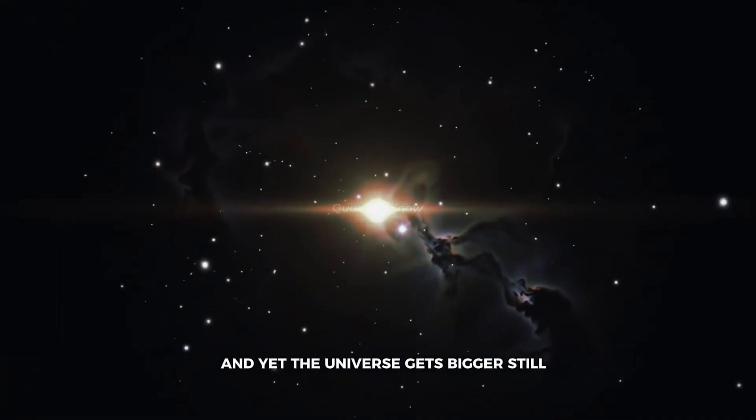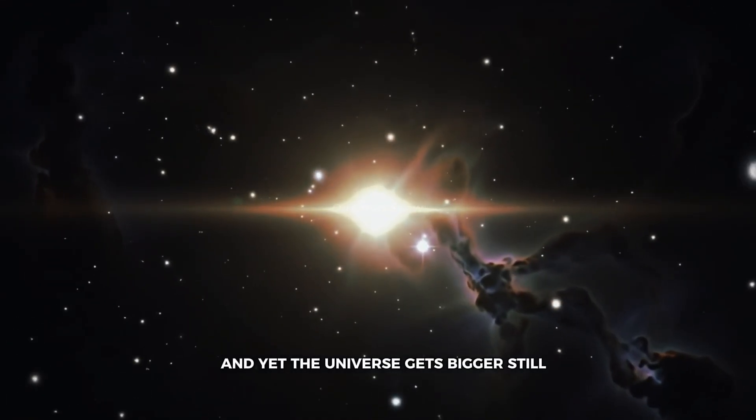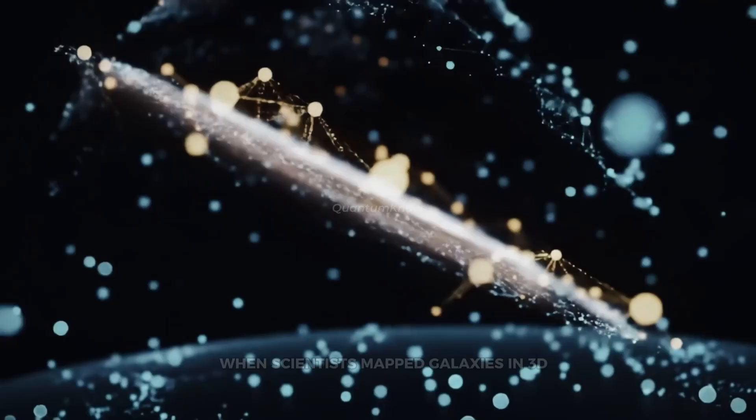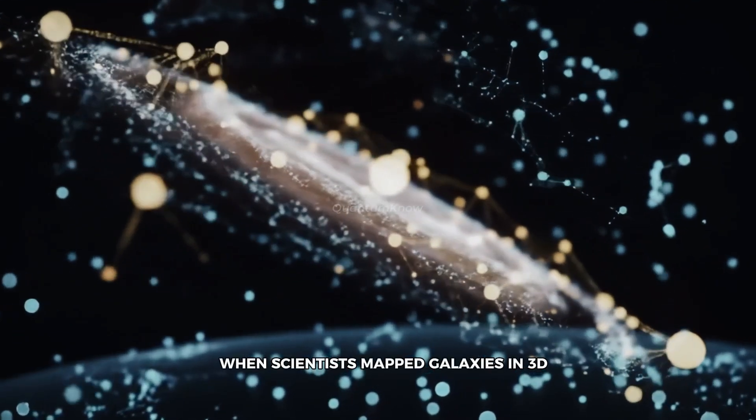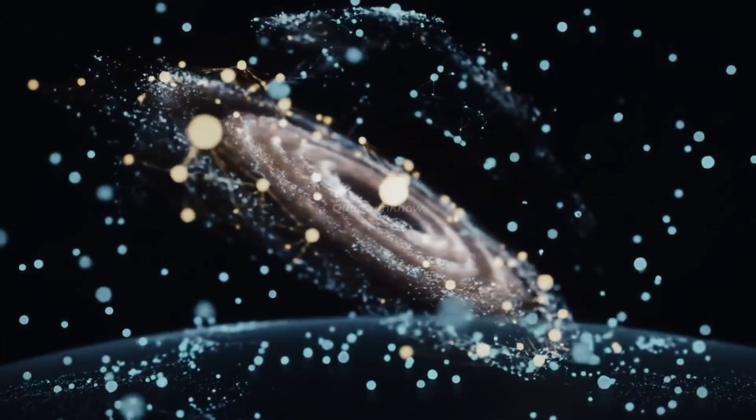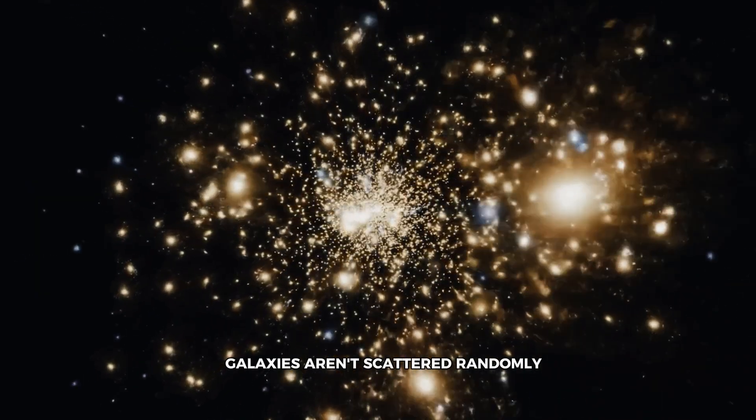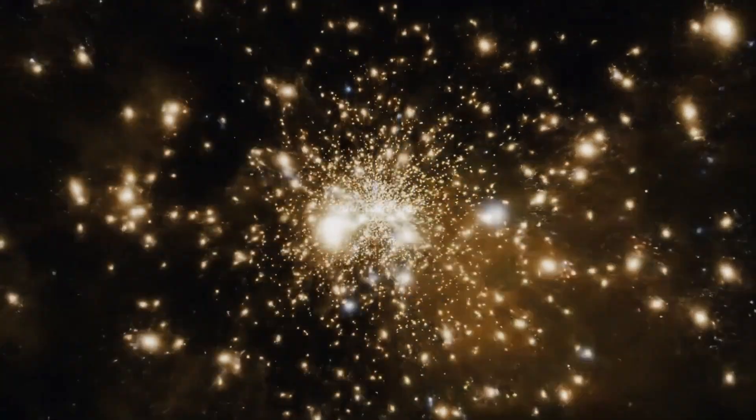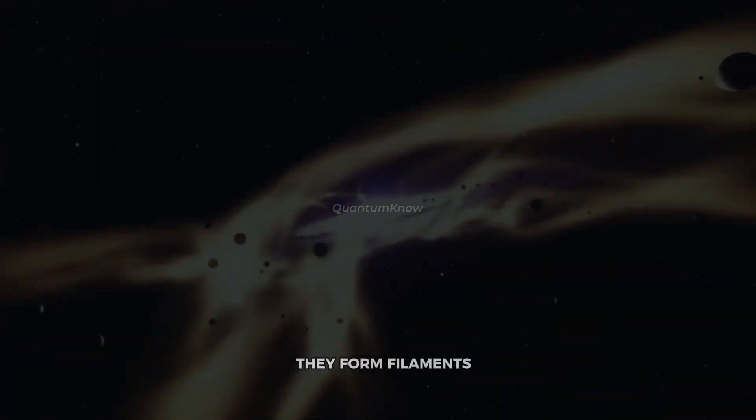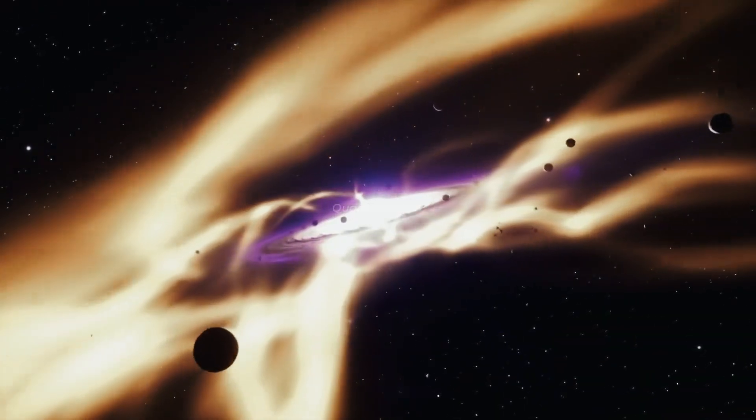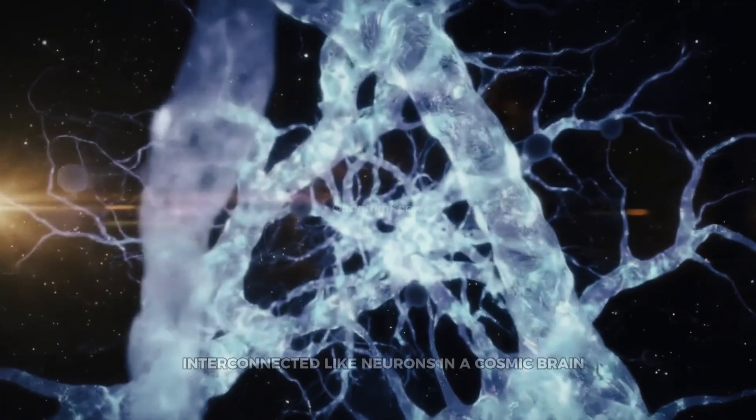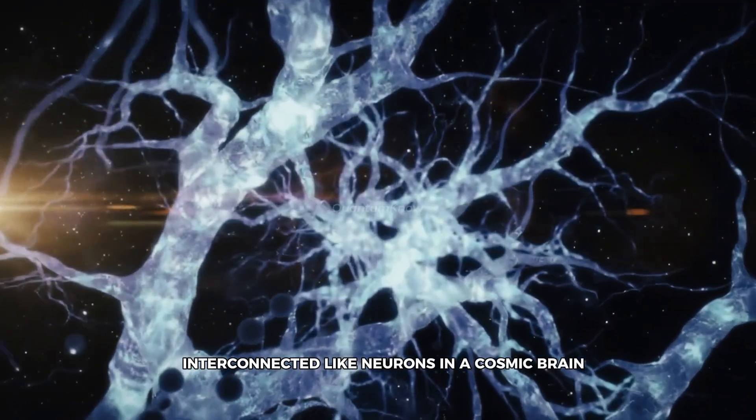And yet, the universe gets bigger still. When scientists mapped galaxies in 3D, they discovered something shocking. Galaxies aren't scattered randomly. They form filaments, long strands of stars and dark matter, interconnected like neurons in a cosmic brain.